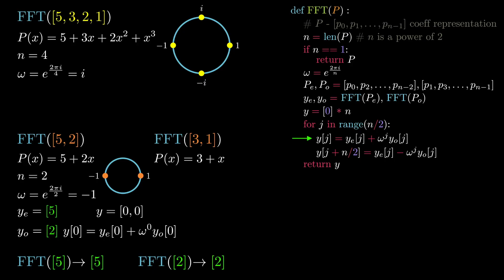The first line assigns the zeroth index of y to be the zeroth index of ye plus omega to the power of zero multiplied by the zeroth index of yo. This is essentially the evaluation step required for the root of unity number one, which is omega to the power of zero. This expression ends up being seven, which updates the y list accordingly.